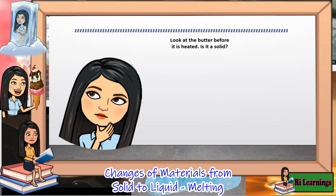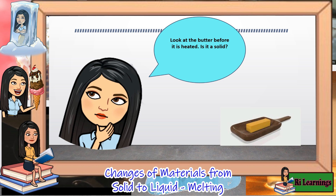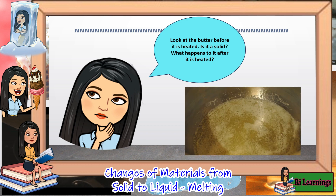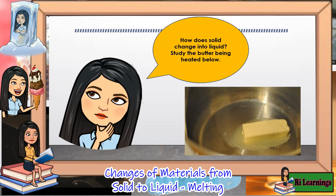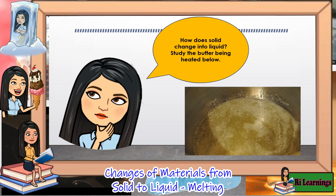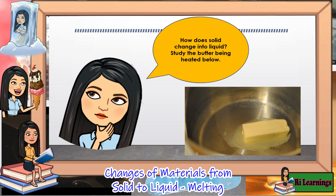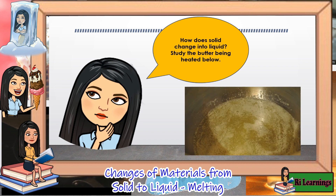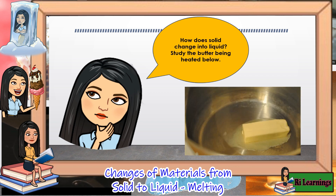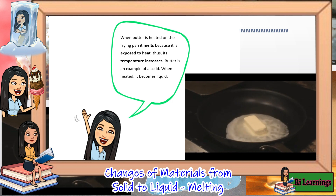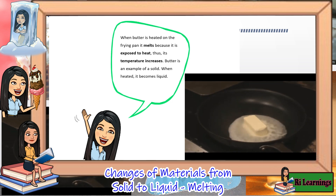Look at the butter before it is heated. Is it a solid? Very good! The butter is a solid. What happens to it after it is heated? How does solid change into liquid? Study the butter being heated below. When butter is heated on the frying pan, it melts because it is exposed to heat.